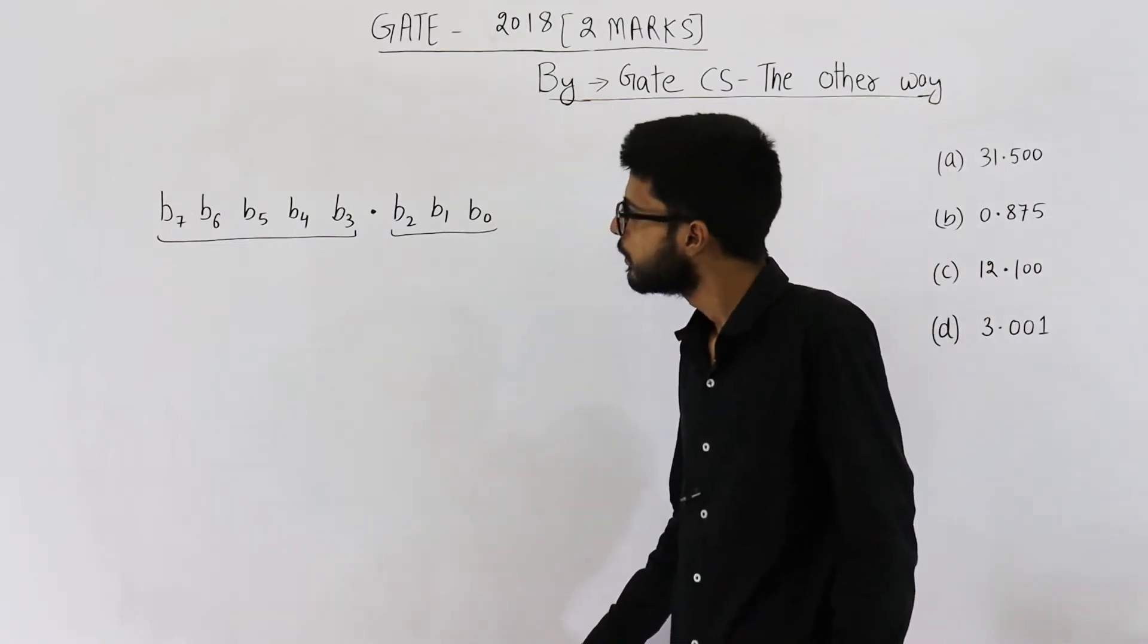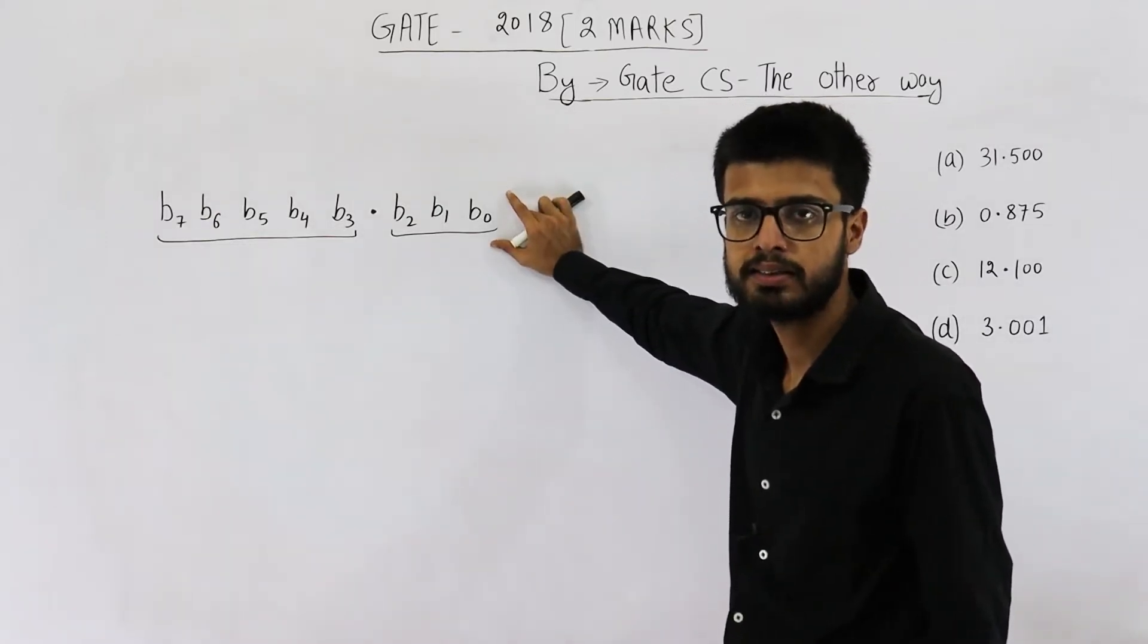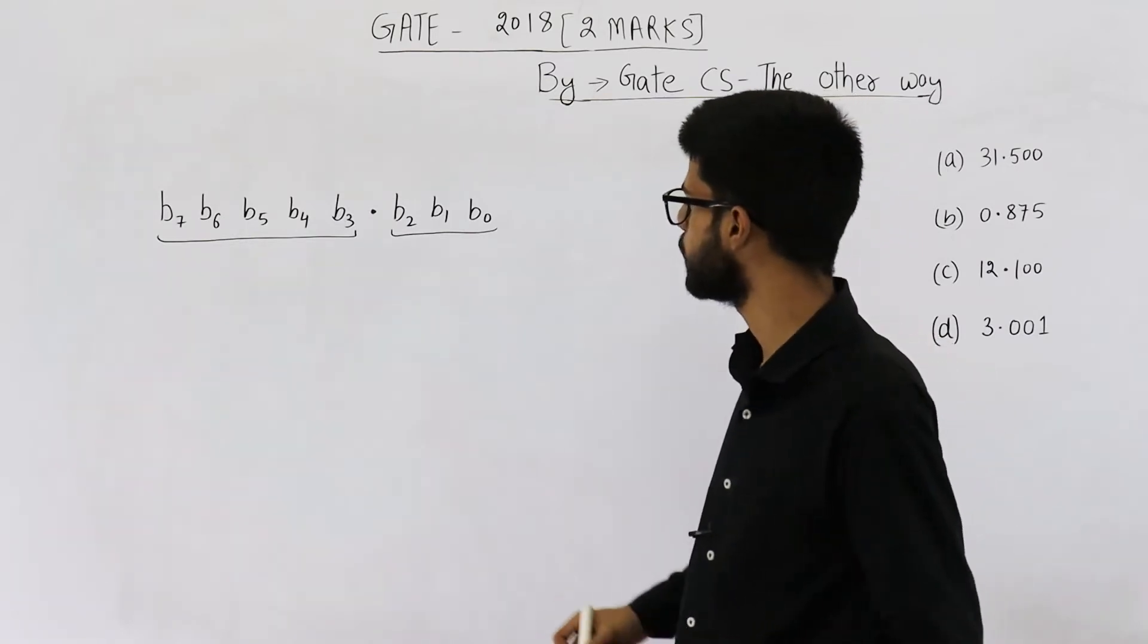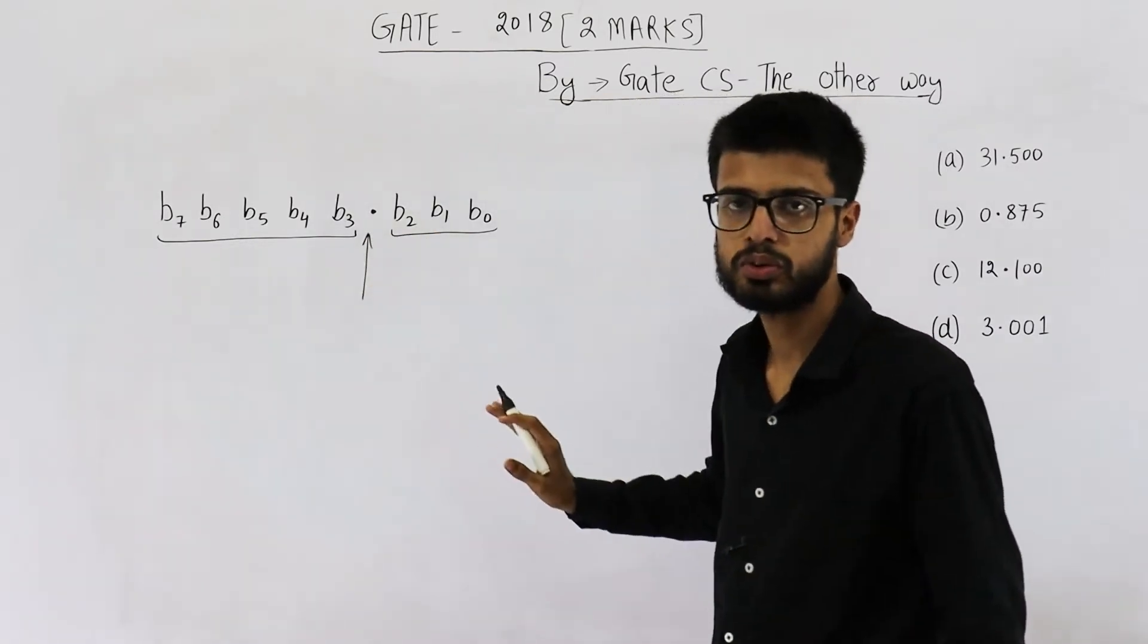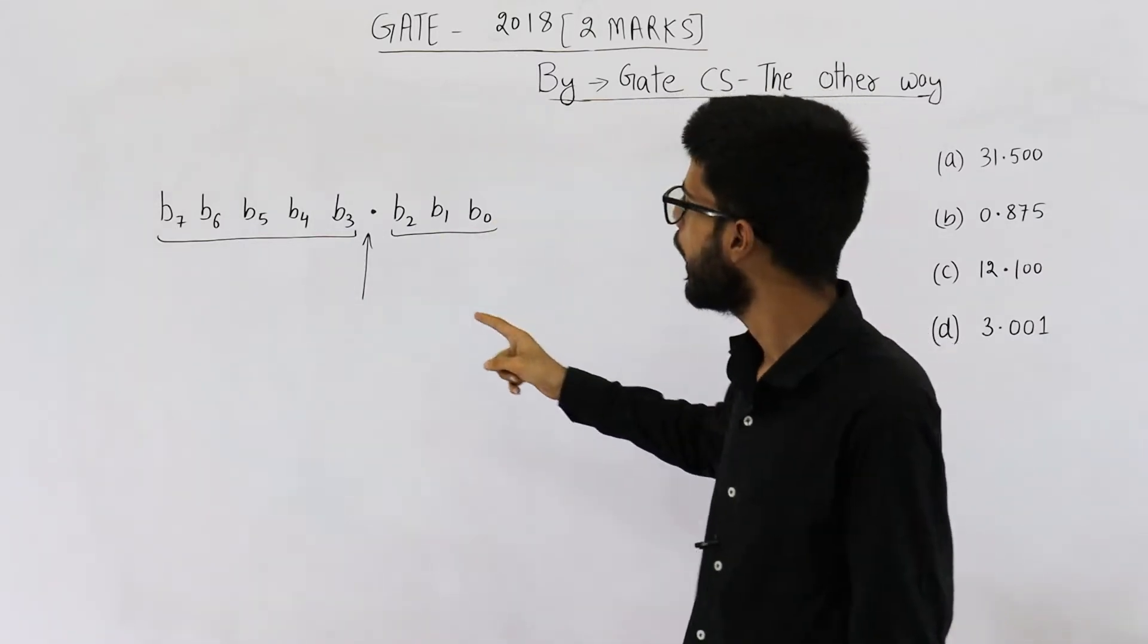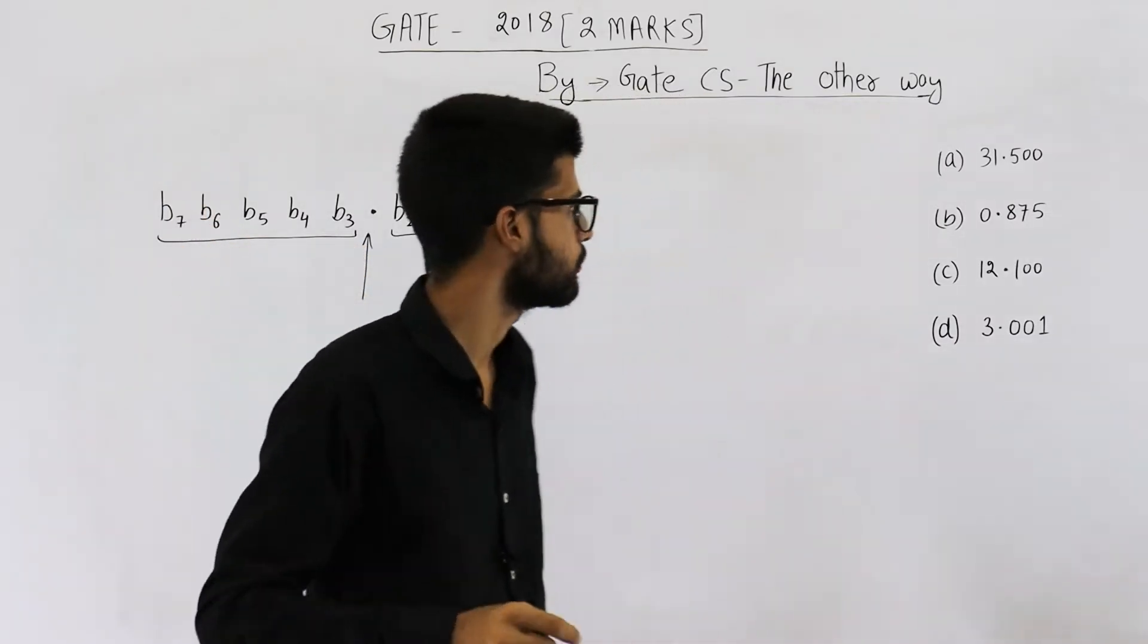Look, they are saying we are using 8-bit unsigned fixed binary point representation. That means you cannot move this radix point. It has to stay here. There are only three bits for the fractional part and there are exactly five bits for representing the actual number.